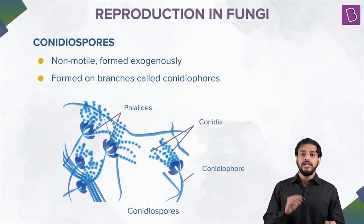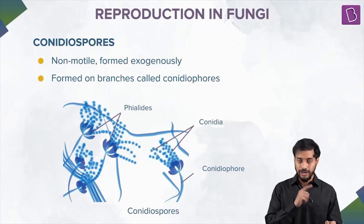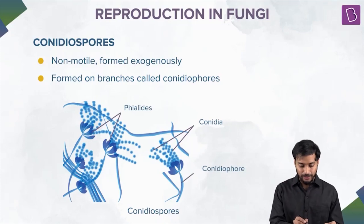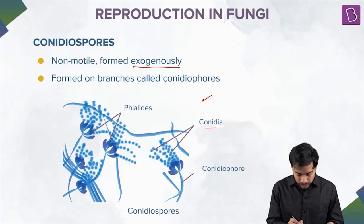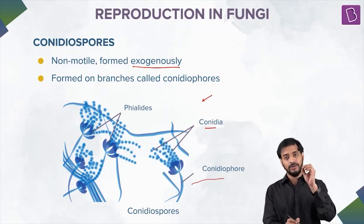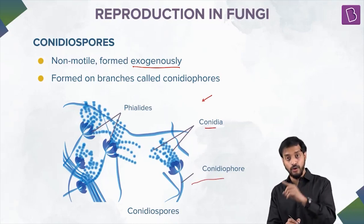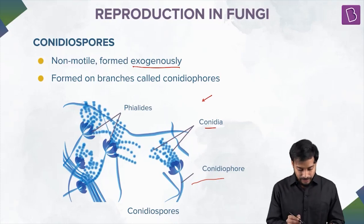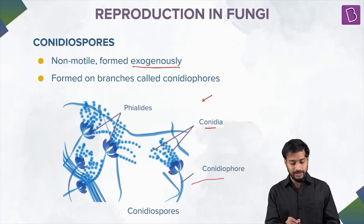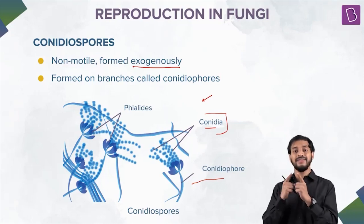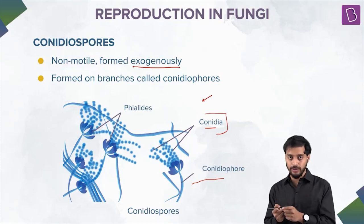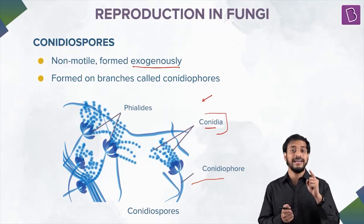Next, conidiospores. The key difference from sporangiospores is that conidiospores are produced exogenously — from outside. See the diagram: these spores are formed on branches called conidiophores, and these are the conidiospores, also called conidia. So if the difference is asked: conidiospores are produced exogenously, sporangiospores are produced endogenously.